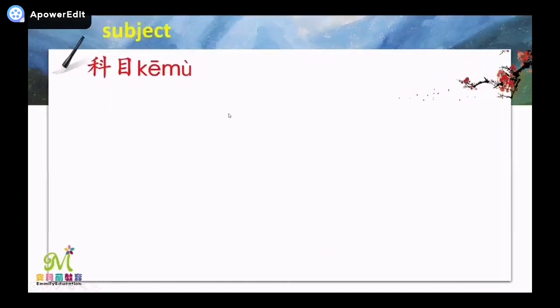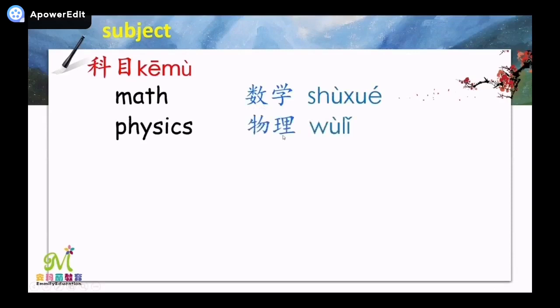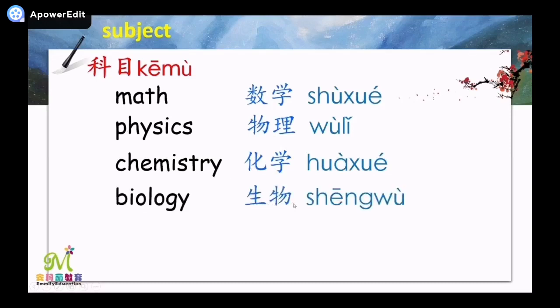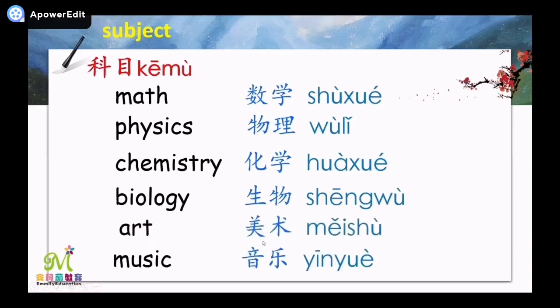The second important topic is the subjects — 科目. First: 数学 — math. 物理 — physics. 化学 — chemistry. 生物 — biology. 美术 — art. Last one: 音乐 — music.